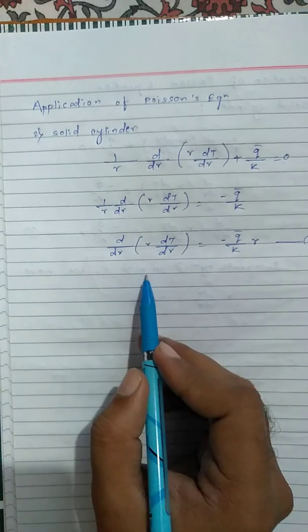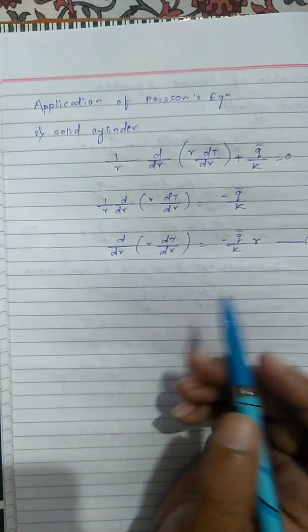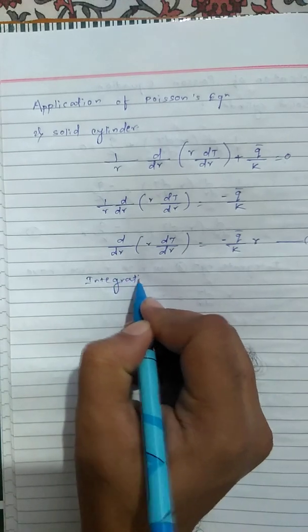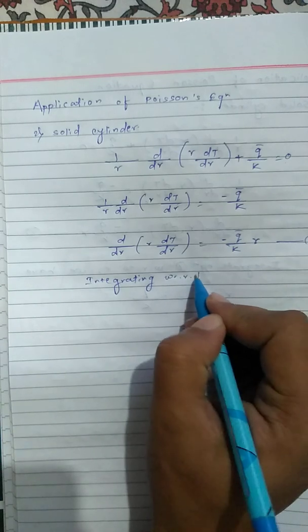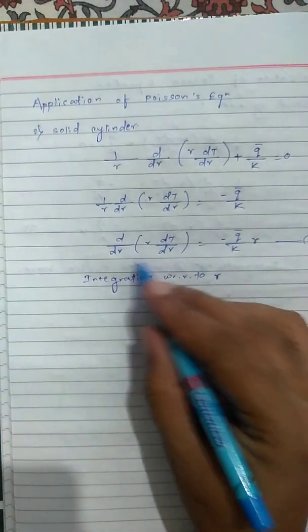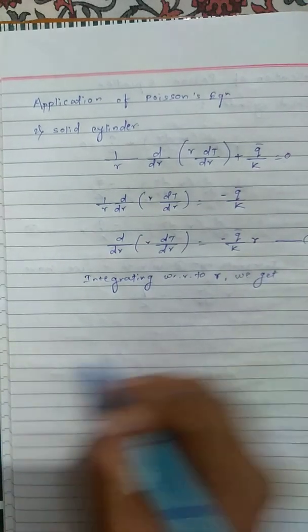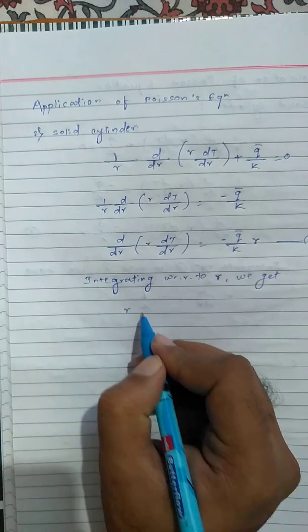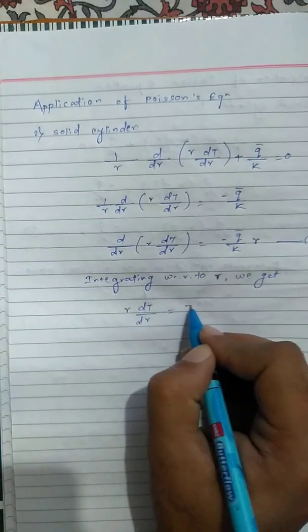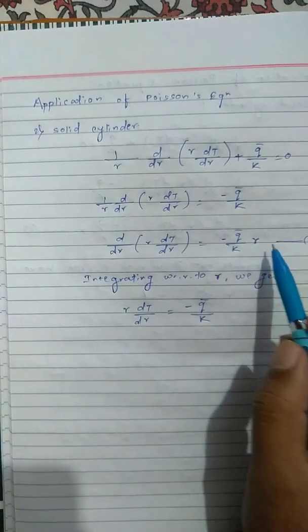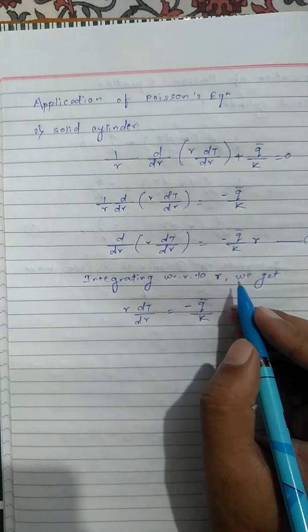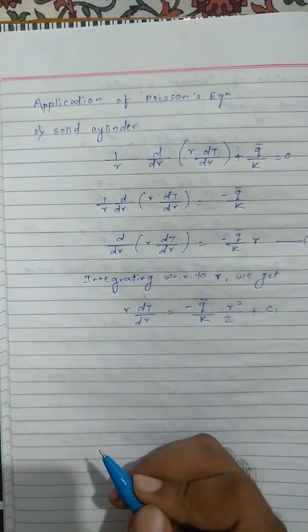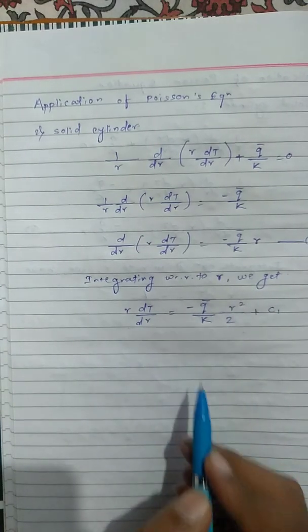Integrating equation 1 with respect to r, the d/dr is removed, leaving r dt/dr = −(q̄/k)(r²/2) + C₁.